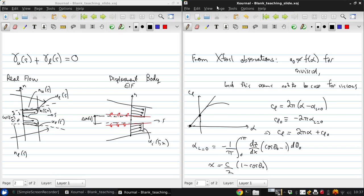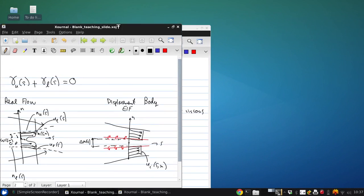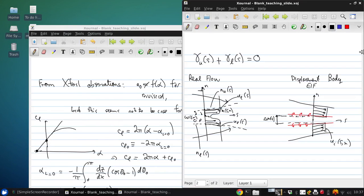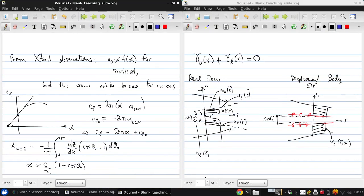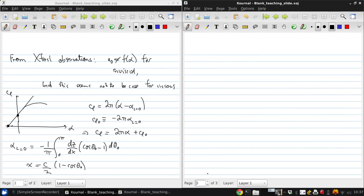Now, what we did before was we interpreted the zero lift angle of attack to be an effective angle of attack, or I should say we interpreted the negative of the zero lift angle of attack to be an effective angle of attack caused by the airfoil camber.